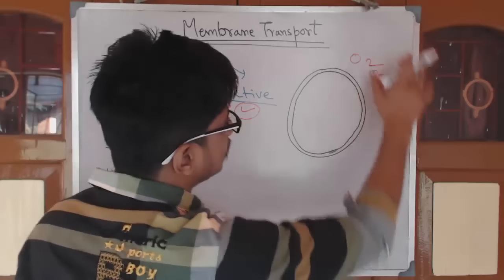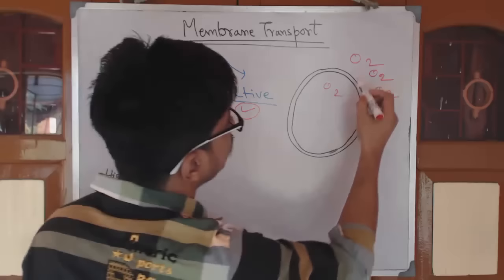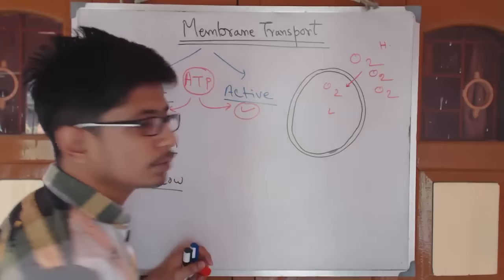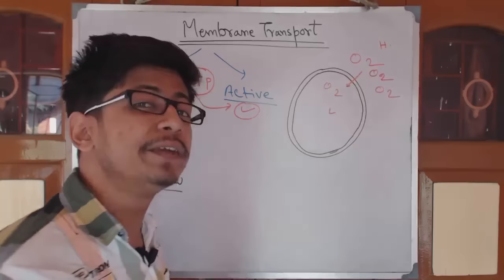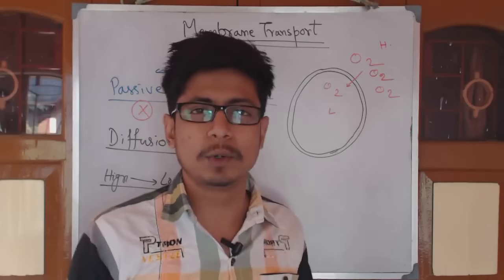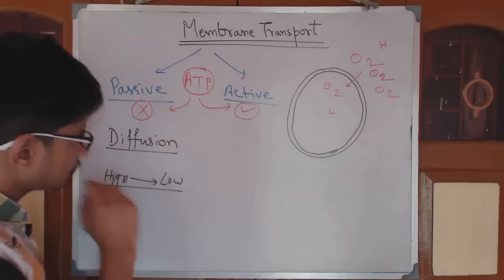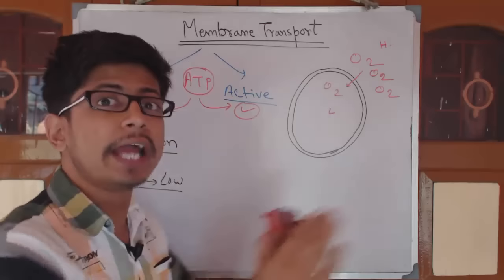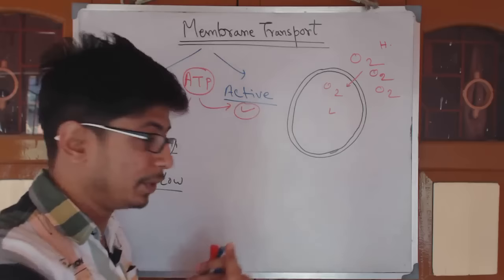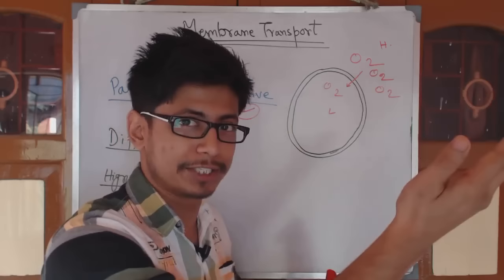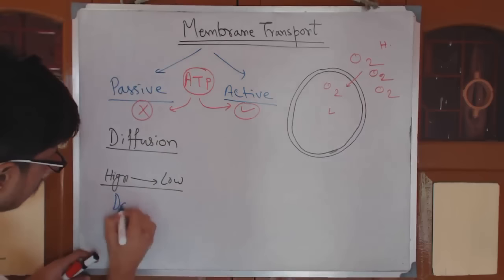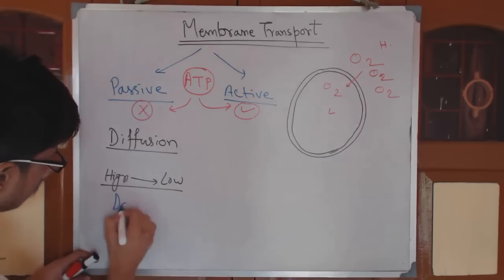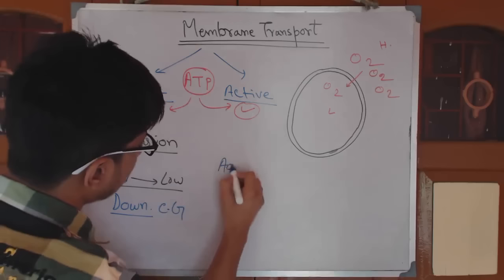For example, if there is a high concentration of oxygen outside the cell and a low concentration inside, oxygen can easily diffuse through the cell membrane — moving from high to low concentration with no energy required. Passive transport goes down the concentration gradient. Active transport, by contrast, goes against the concentration gradient and requires an energy source.